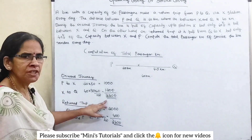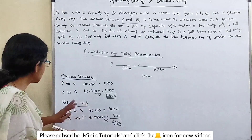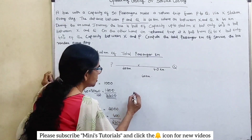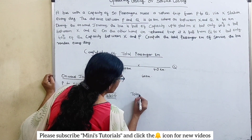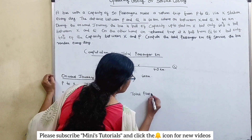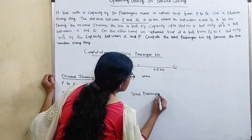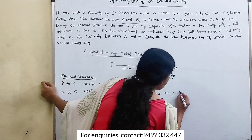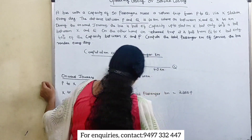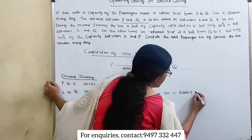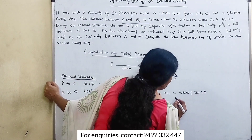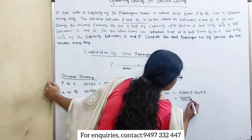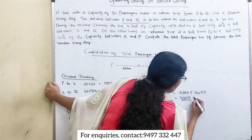Onward journey total is 2200 passenger kilometers. Return trip total is 2400 passenger kilometers. Therefore, total passenger kilometers is equal to 2200 plus 2400, that is equal to 4600 passenger kilometers.